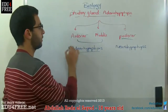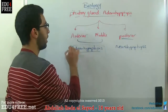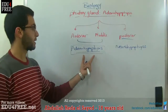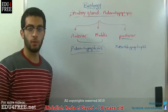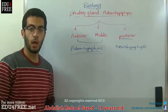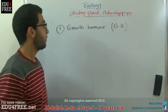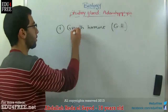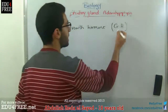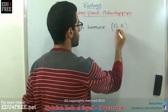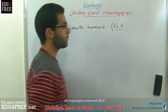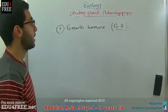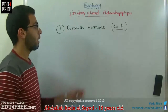Today we are going to talk about the adenohypophysis. The first type of hormone it produces is the growth hormone, which we refer to as GH. This hormone is responsible for protein synthesis inside the human body.